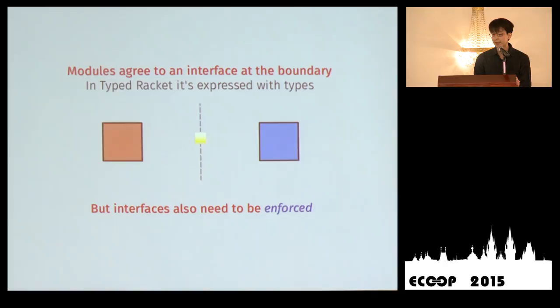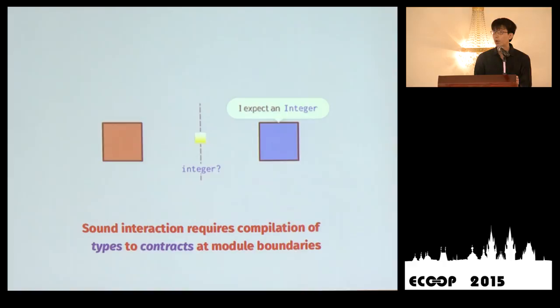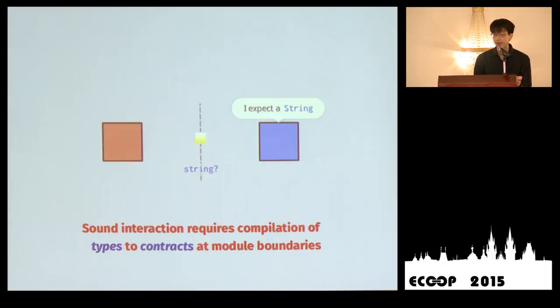Zooming into the interaction of modules, typed and untyped modules have to agree to some interface in order to interact. In Typed Racket, we express these interfaces with types, and they need to be enforced — particularly when untyped code interacts with typed code. We use contracts to do this. When a typed module imposes an interface — for example, an integer type on an untyped module — we compile that type to a contract and place it on the module boundary. For an integer type, we can immediately check this with an integer predicate; for a string type, we use a string predicate.